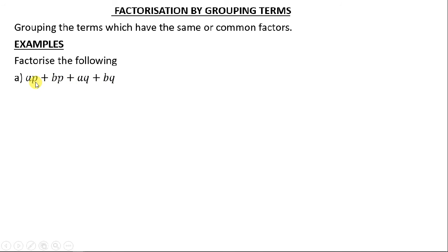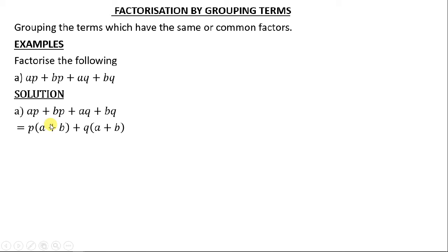We have ap + bp + aq + bq. We are going to group them in twos: group ap and bp, then group aq and bq. What is common between ap and bp is p, so we write p. What has remained is a and b. Then what is common between aq and bq is q — write down what is common.